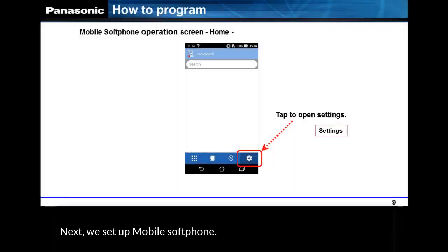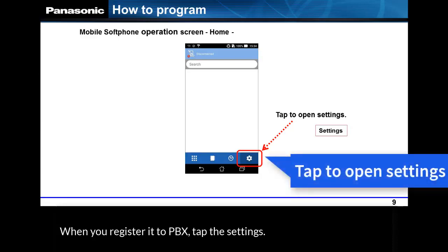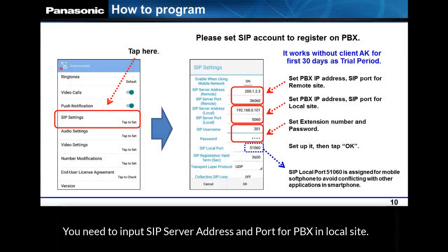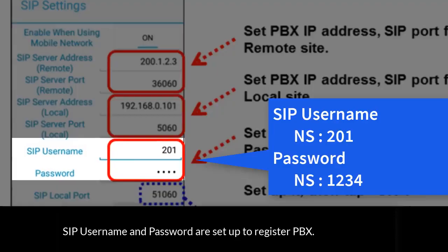Next, we set up Mobile Softphone. This is the home screen. When you register it to PBX, tap Settings. You need to input the SIP server address and port for PBX in the local site. SIP username and password are set up to register to PBX.